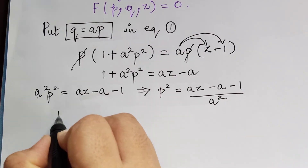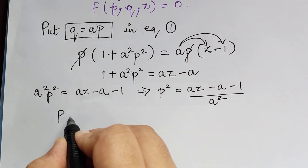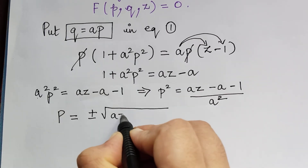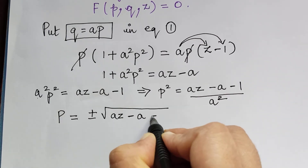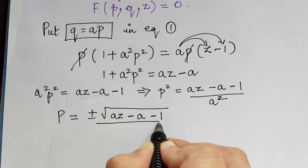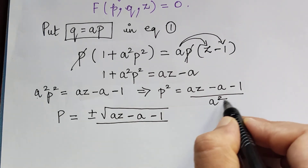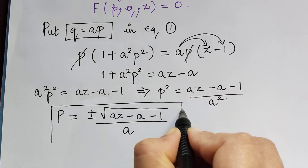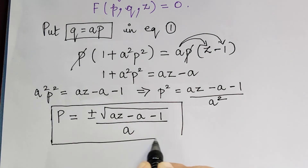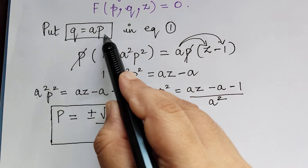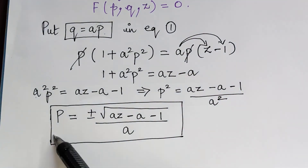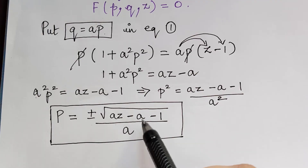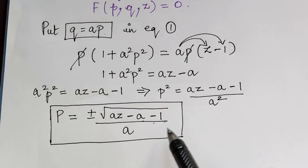Taking square roots on both sides, p equals plus or minus the square root of az minus a minus 1 divided by a, since the square root of a squared is a itself. So we have obtained the value of p.